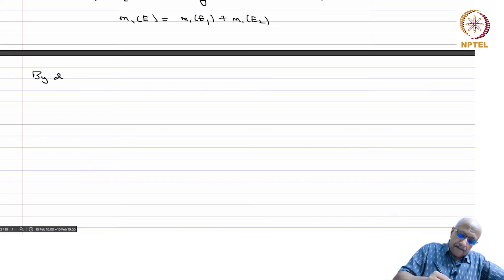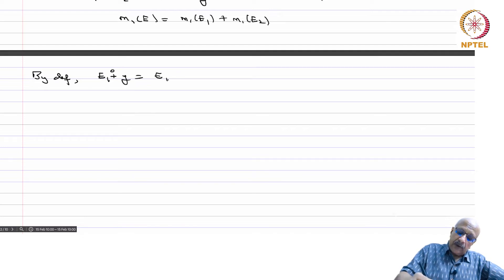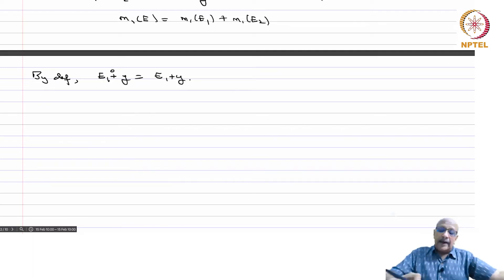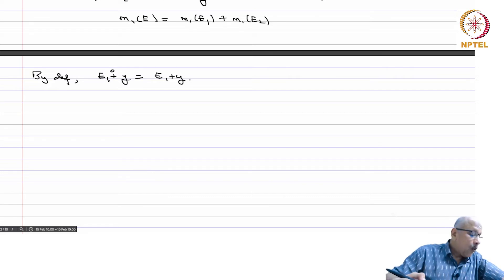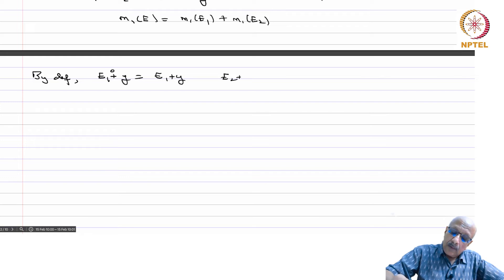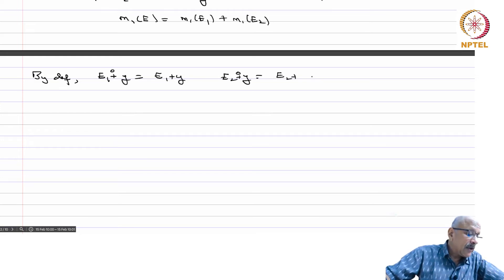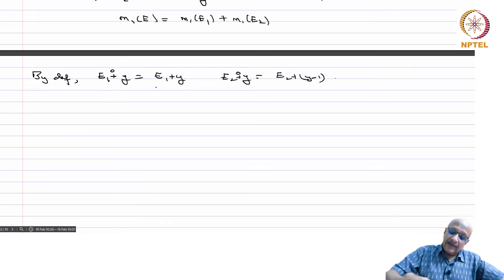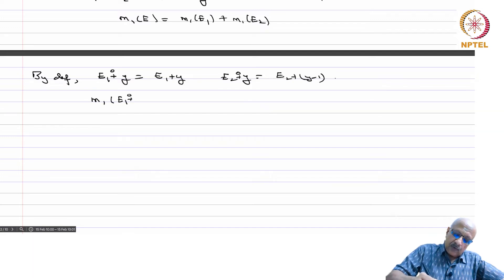By definition, E1 plus y is just the ordinary translate E1 + y, because elements of E1 are in [0, 1-y) so any element plus y will be strictly less than 1. Similarly, E2 plus y (mod 1) equals E2 + y - 1, and these are just ordinary translations, so m1 of E1 plus y equals m1 of E1.